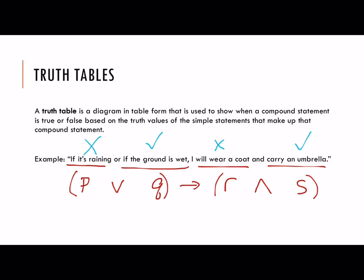We are going to make charts to list out all of those different options. If you wanted to know if this is a true or false statement, you would look down that list in the chart and find the row that has all of the conditions that exist. We're going to have rows and columns, and we'll be able to label it as either true or false.